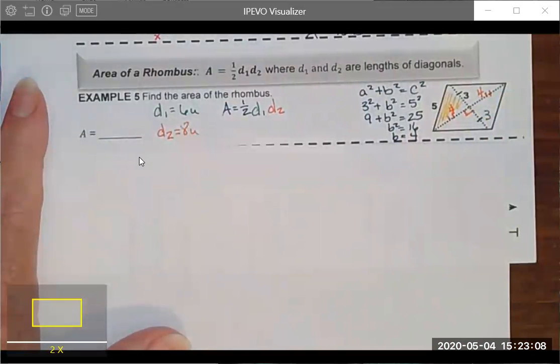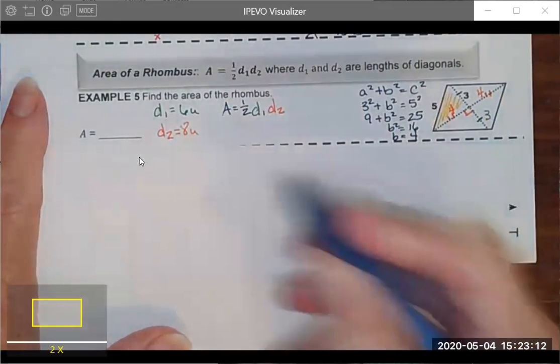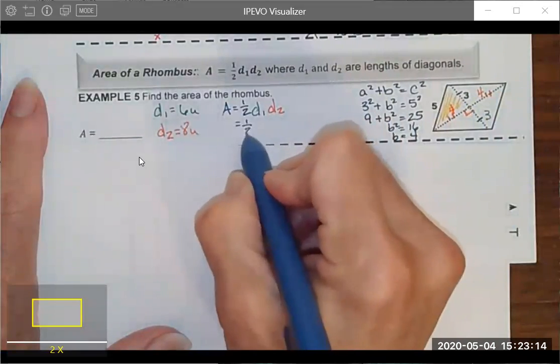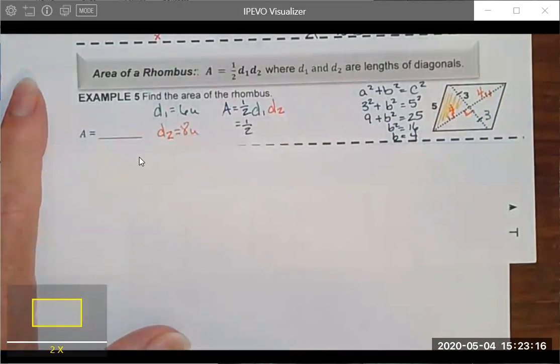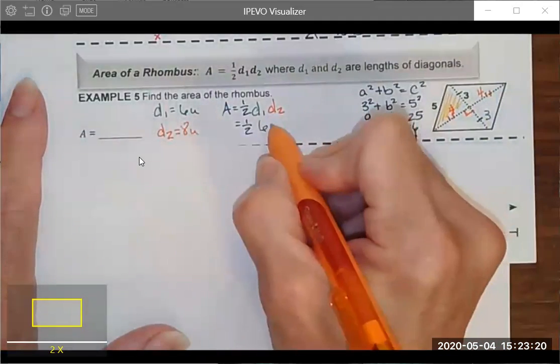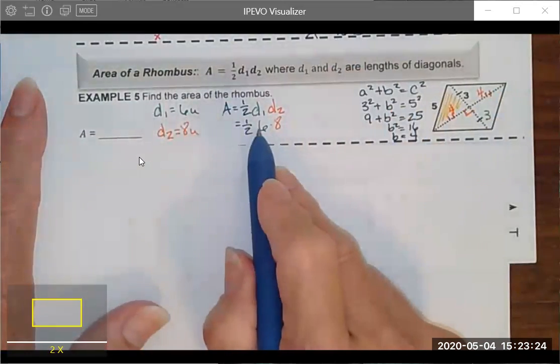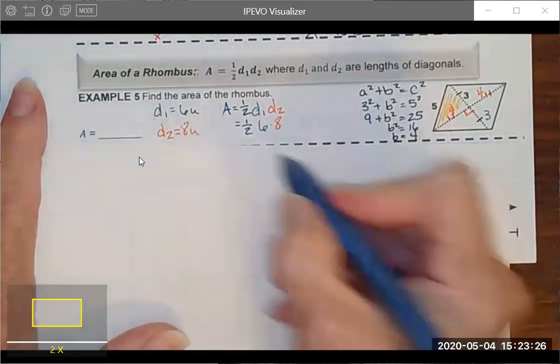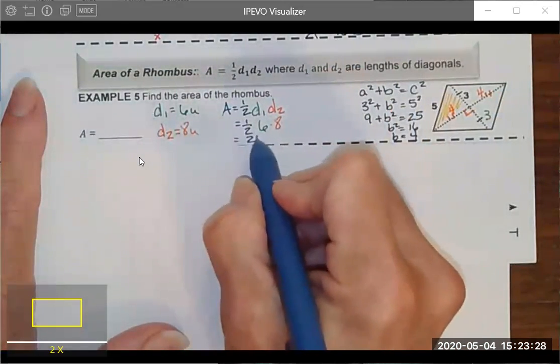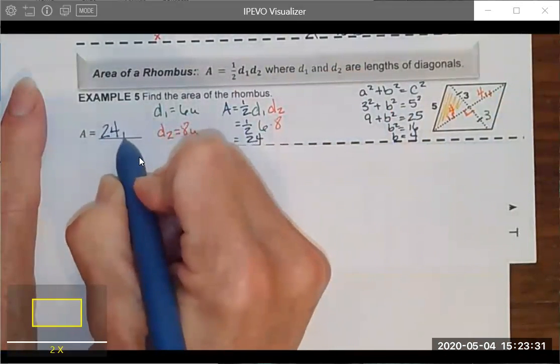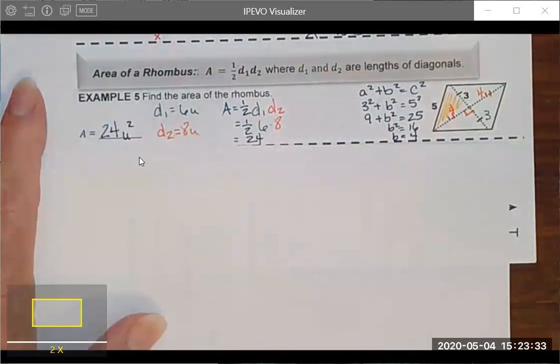So now I have enough information that I can actually find my area. My area is going to be 1 half my first diagonal which we said was 6 times my second diagonal which we calculated as being 8. Half of 6 is 3. 3 times 8 is 24. So my area for this rhombus is 24 units squared. Pretty cool.